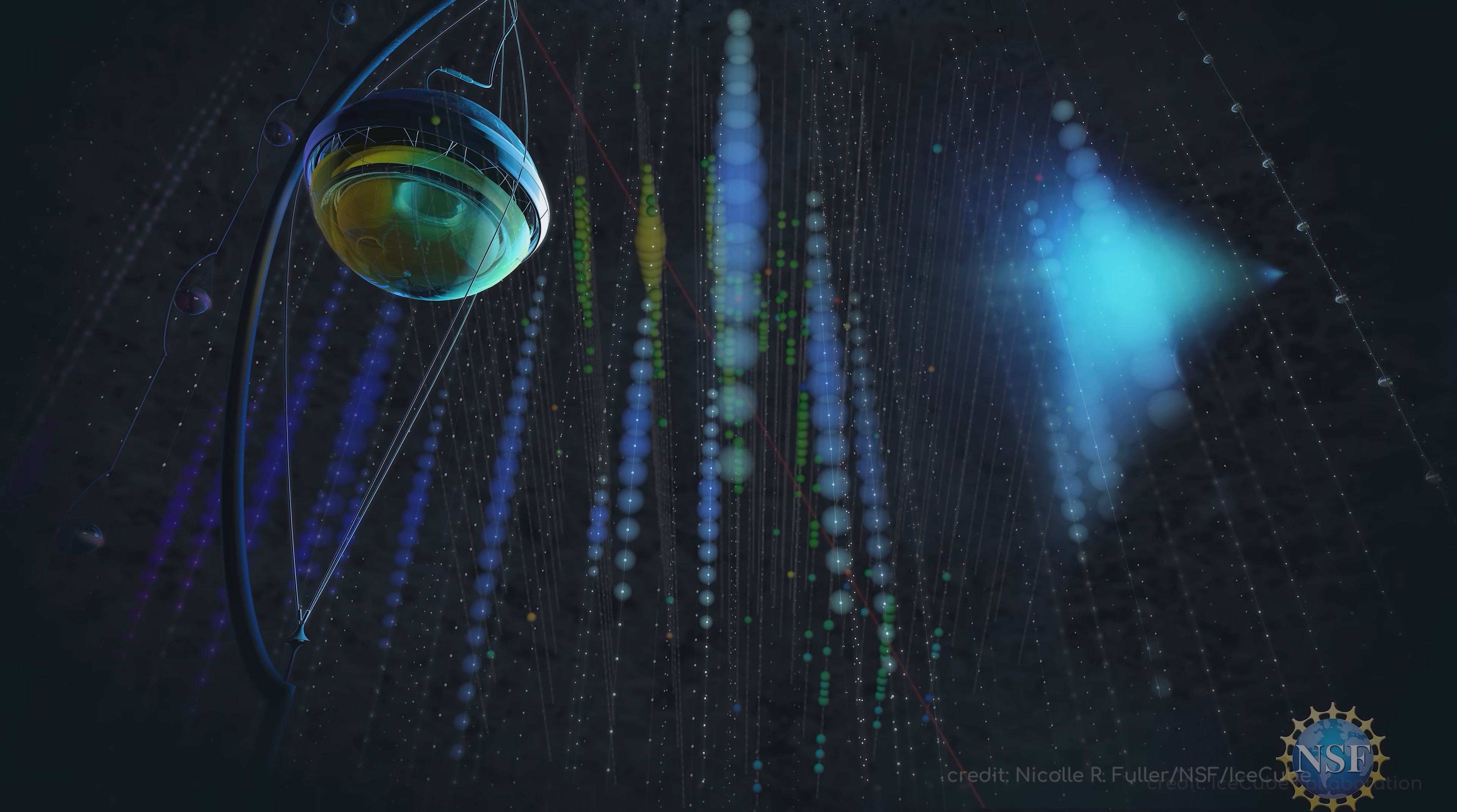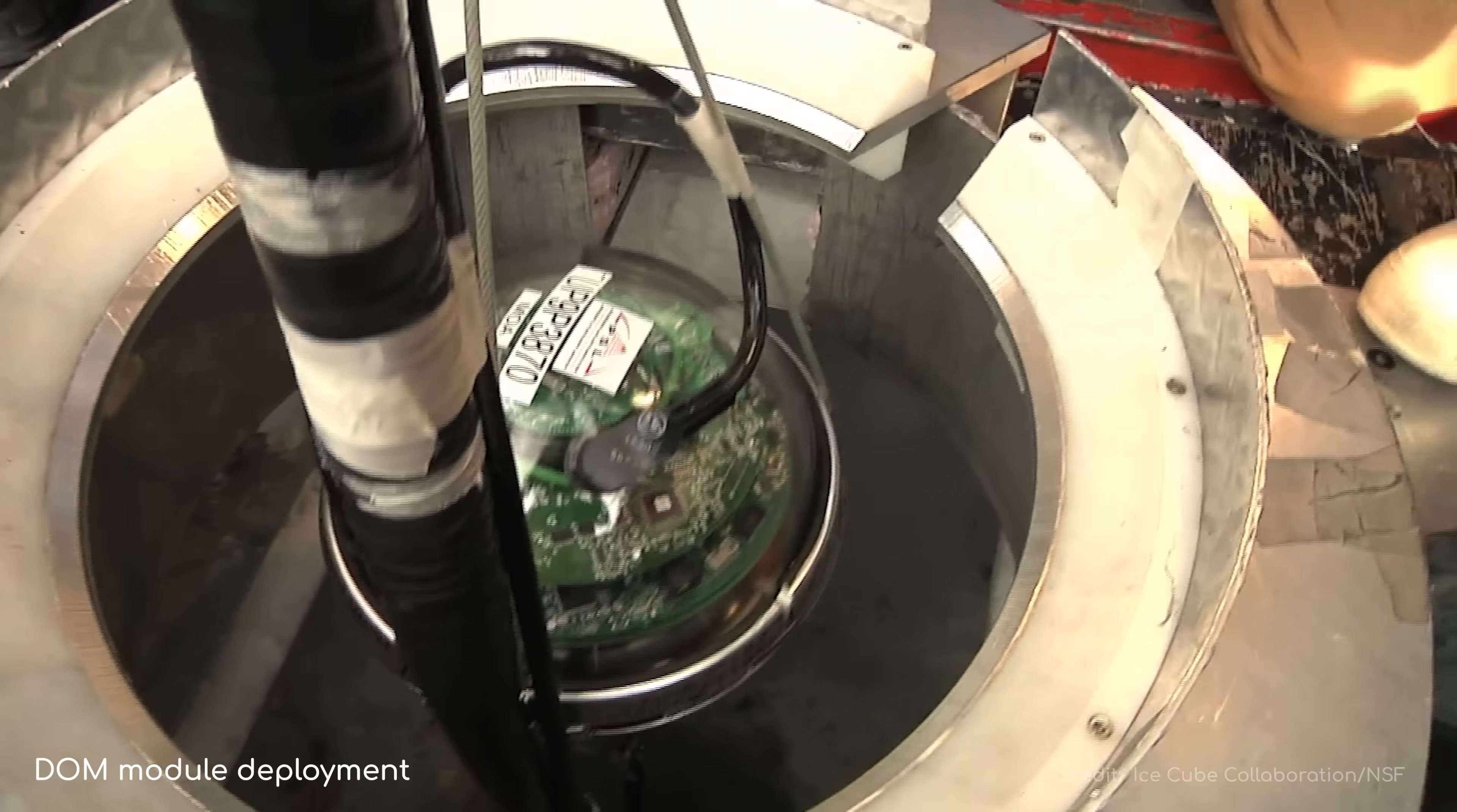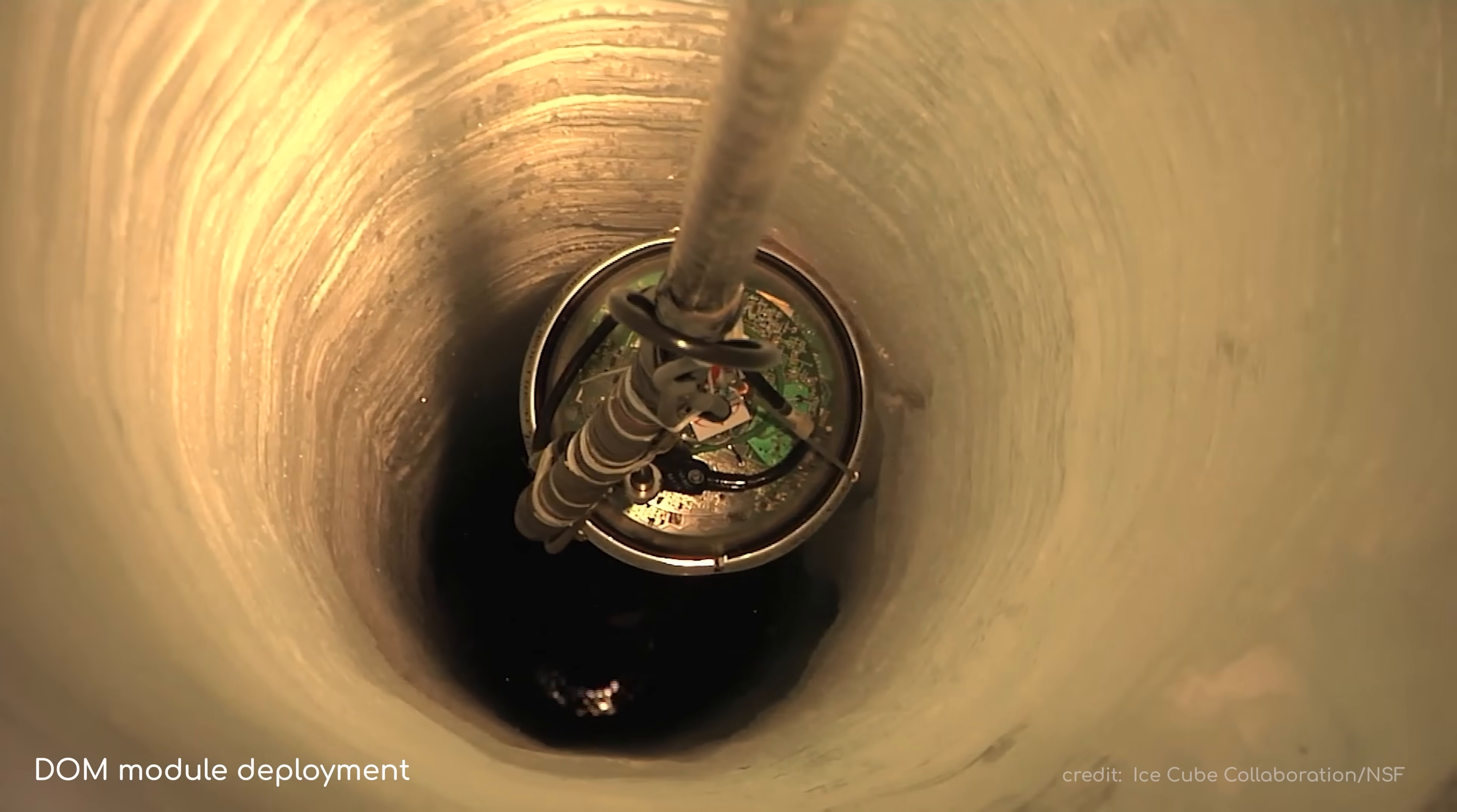These orb-like detectors are marvelous, intricate devices designed to detect the faintest luminal hints in the icy mass. Each DOM is encased in a 13-inch spherical glass pressure case, which protects the electronics inside from the extreme cold and high pressure of the Antarctic ice. Inside, there is a photomultiplier tube sensitive enough to detect even a single photon, along with various components that amplify the signal and convert it into digital data, which is then transmitted up the cables to the surface.